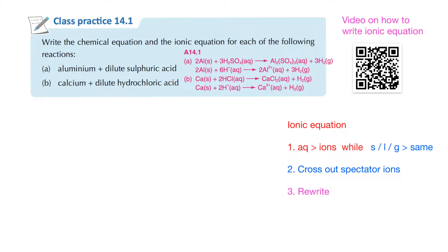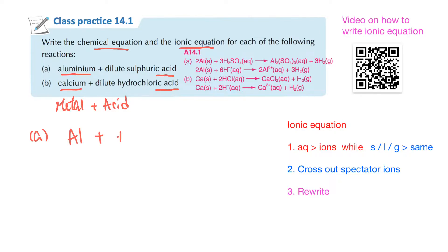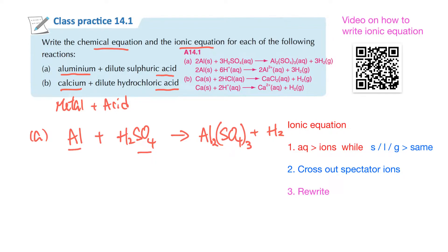Before that, let's do class practice 14.1. We have aluminium and calcium — both metals — and sulfuric acid and hydrochloric acid. We'll write the chemical equation and also the ionic equation. For the chemical equation, we have aluminium and sulfuric acid. The salt formed contains Al³⁺ and SO₄²⁻, so we get Al₂(SO₄)₃. We need 2Al and 3SO₄. Leaving behind hydrogen — there should be three H₂.